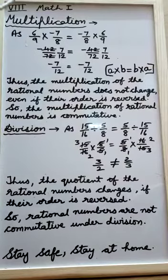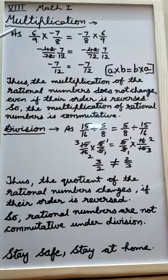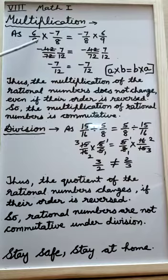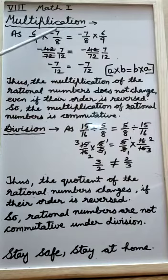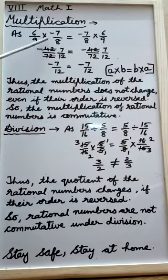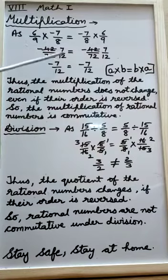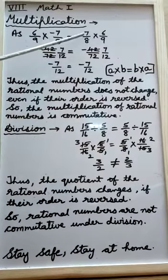Now, commutative property over multiplication. As we see, 6 upon 9 is multiplied by minus 7 upon 8 gives us answer minus 7 upon 12. After interchanging their places,